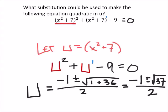So this is what we would get if we solved for U. The problem is that now we need to go in and replace U with what it was originally. And that is X squared plus seven.